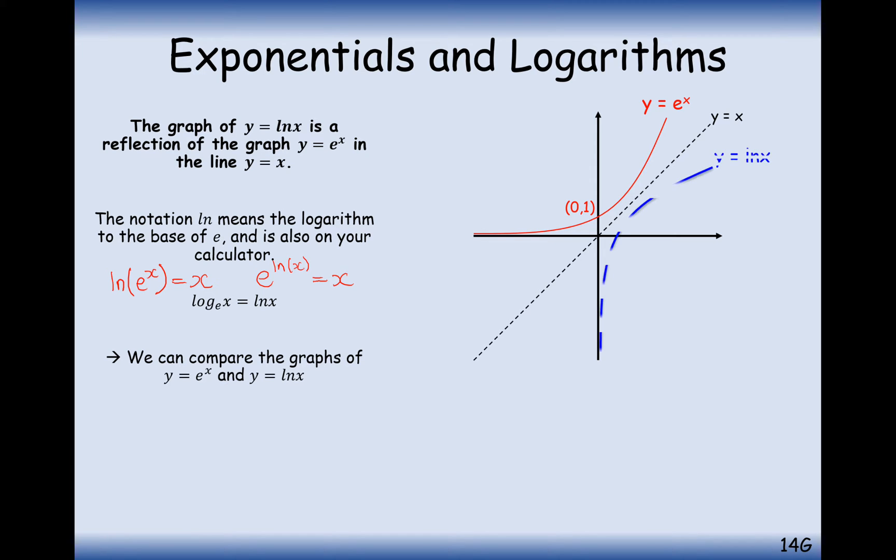So comparing the graphs of these two functions here, this is what the ln of x graph would look like. So it's one of these to remember for the exam, as is the e to the x graph. And you can see here, the relation between the two will reflect in the y equals x line. It will have an intersection point at (1, 0). And you'll see here that you can never ln a negative value because there's no graph on that side of the axes.